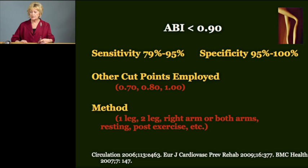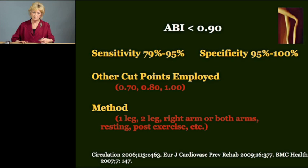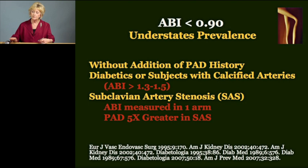ABI less than 0.9 has been the most commonly used definition. This is quite sensitive and quite specific. However, it's important to keep in mind that other cut points have been employed such as 0.7, 0.8, and 1.0 — so it's not always 0.9. In addition, this can be dependent on the method — that is, whether the pulses are taken in one leg or both legs, in one arm or both arms, resting or post-exercise ABIs — you can get different results depending on how that's done.